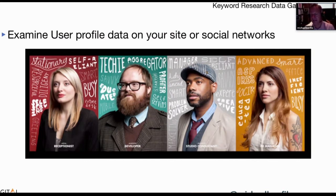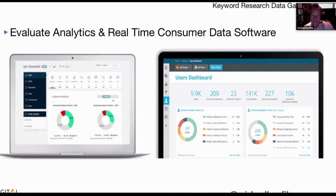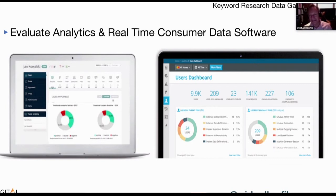Examine user profile data on your site or in social networks. If people provide profile information on your website, you can learn a lot about their behaviors. Evaluate analytics and real-time consumer data software — there's some good software that tells you what types of people are interested in sleep apnea. And your own analytics will tell a story. If you have attribution set up correctly, you can start understanding the attribution chains of your users. The key is gathering data for the keyword research sets you'll need for your content gap analysis.